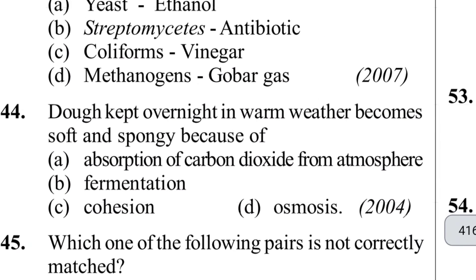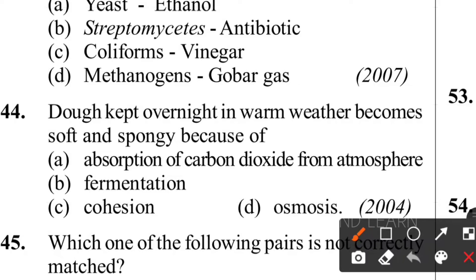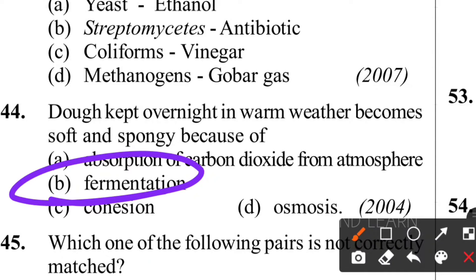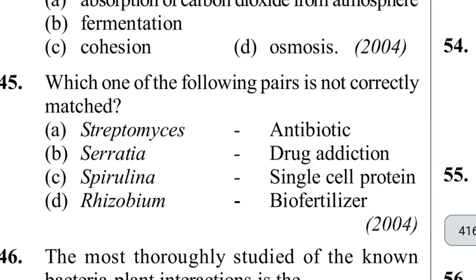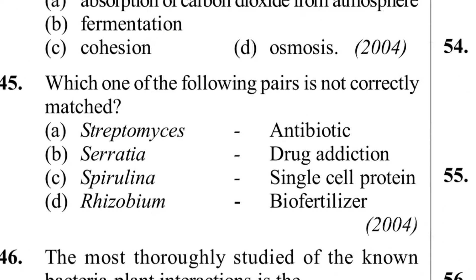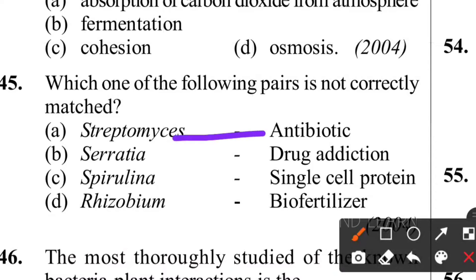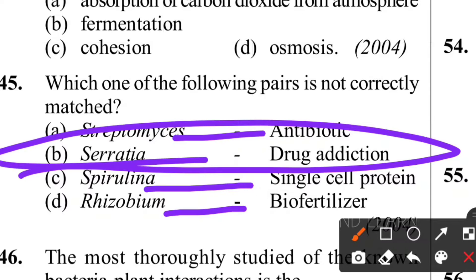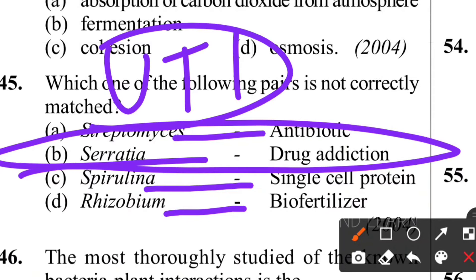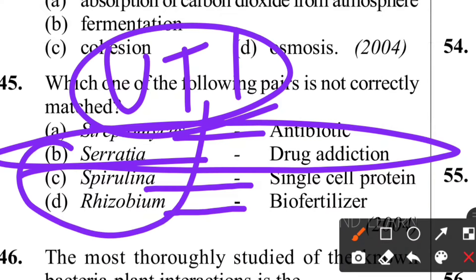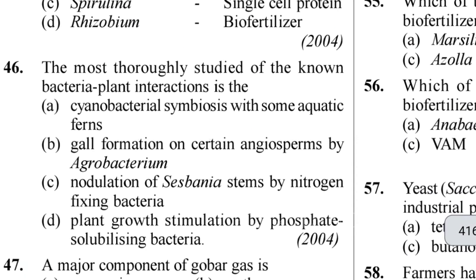Forty-fourth question: dough kept overnight in warm weather becomes soft and spongy because of the process called fermentation - very easy. Forty-fifth question: which of the following pair is not correctly matched? Option A - antiseptic antibiotics, Spirulina single cell protein, Rhizobium biofertilizer - all correct. Option B - Serratia - drug addiction is wrong; Serratia is a harmful human pathogen causing urinary tract infection (UTI), not drug addiction. Option B is the correct answer.